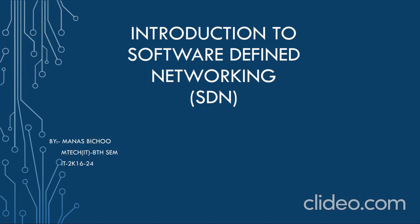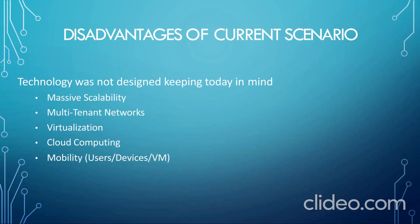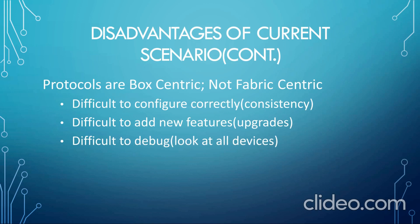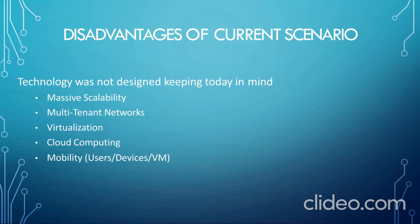In order to do this networking, we use SDN or Software Defined Networking, which we will be talking about in this lecture today. Let us understand why we are using SDN, or what were the current disadvantages in the scenario which led to the invention of SDN. Technology was not designed keeping today in mind. Earlier technology was not implementing key features such as massive scalability, multi-tenant networks, virtualization, cloud computing, and mobility. The protocols were box-centric, not fabric-centric — difficult to configure correctly, difficult to add new features, and difficult to debug.